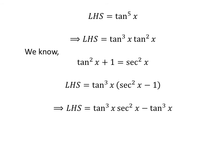Straight multiplication gives us LHS = tan^3(x) sec^2(x) - tan^3(x), which equals the right-hand side of the identity. Thus, we have verified the identity.